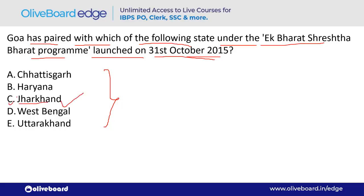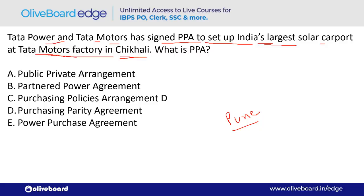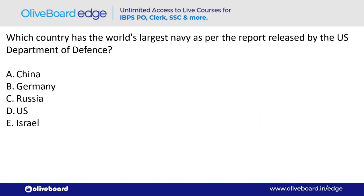Tata Power and Tata Motors signed a PPA (Power Purchase Agreement) to set up India's largest solar carport at Tata Motors' factory in Chikali. Option E — Power Purchase Agreement — is the correct answer.